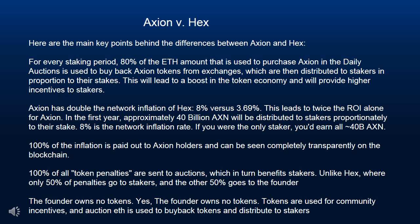100% of the inflation is paid out to Axion holders and can be seen completely transparently on the blockchain. 100% of all token penalties are sent to auctions, which in turn benefits stakers — unlike HEX, where only 50% of penalties go to stakers and the other 50% goes to the founder. The founder owns no tokens; tokens are used for community incentives, and auction fees are used to buy back tokens and distribute to stakers.